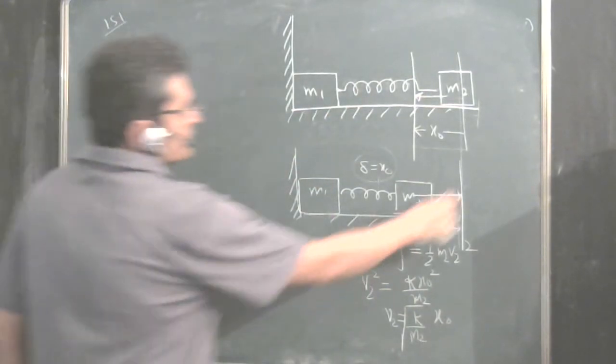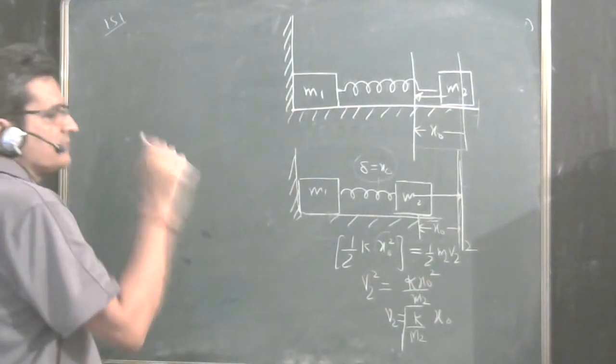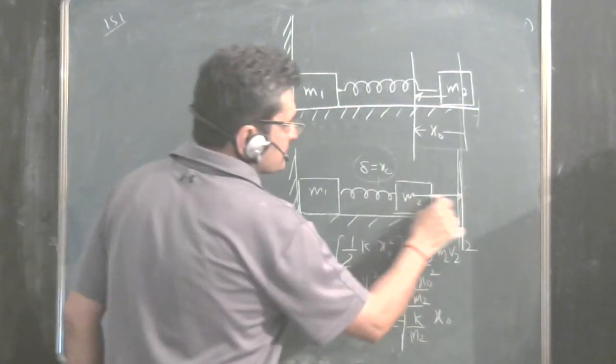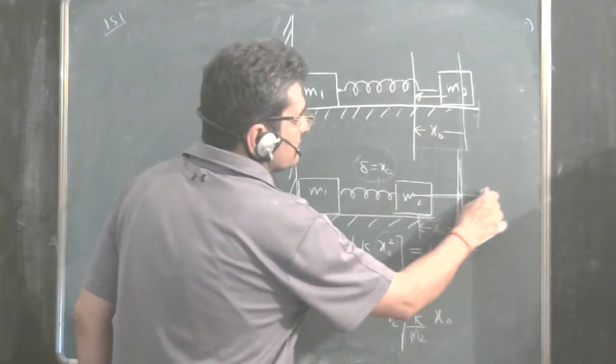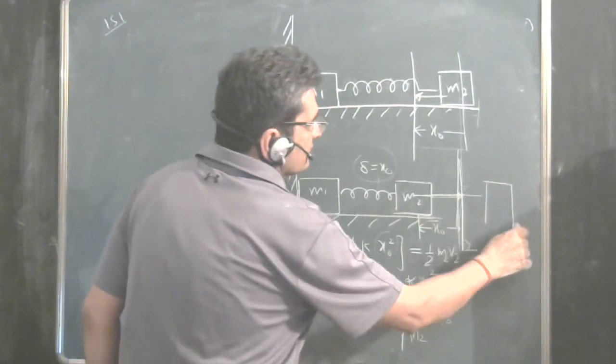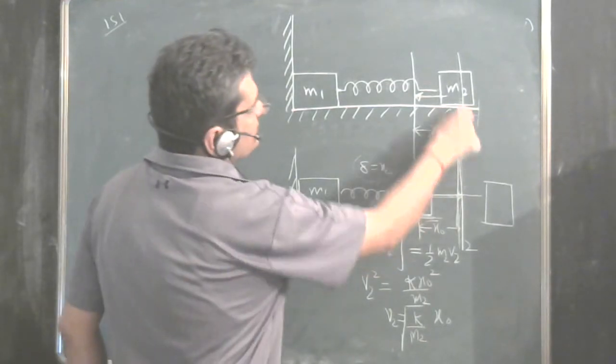What is the velocity of V1 at that point of time? Velocity of V1 will remain 0. Till this time the spring further extends when this mass M2 moves away from the mean position. Till this time it is on this side.